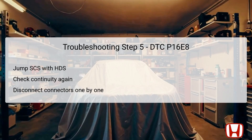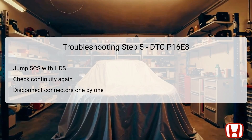In step five, start by jumping the SCS line with the HDS, which allows the diagnostic system to isolate any communication errors more effectively. After initiating this jump, wait for over one minute to ensure that the system appropriately syncs up. Begin to check for continuity between the shutter grille terminal and the body ground while disconnecting connectors such as the PCM, alternator, and 12-volt battery sensor one by one. This method allows you to identify potentially faulty components. If continuity ceases upon disconnecting a specific connector, that particular component is likely not the source of the issue. If continuity remains and no interruptions are found, the final step involves repairing any shorts along the LIN battery sensor wire.